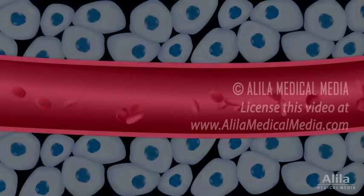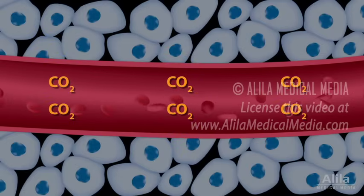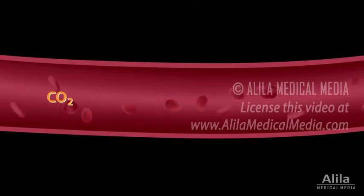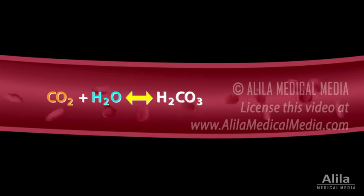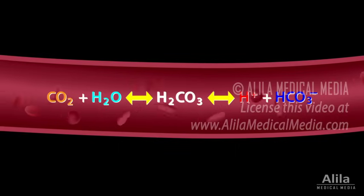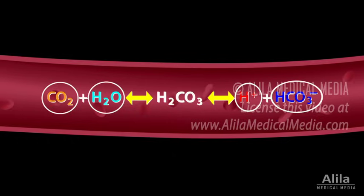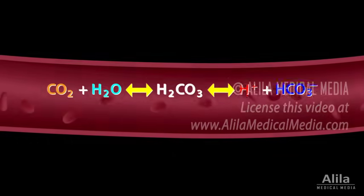Normal cellular metabolism constantly produces and excretes carbon dioxide into the blood. Carbon dioxide combines with water to make carbonic acid, which dissociates into hydrogen ions and bicarbonate. This is an equilibrium, meaning all of the components of the left and right sides coexist at all times, and the concentration of any component is determined by that of others at any given moment.